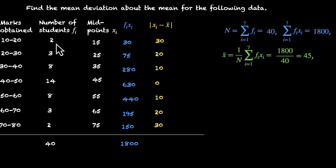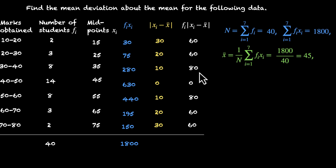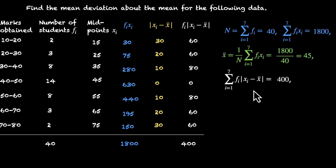But 30 appears twice and 0 appears 14 times, so we must account for frequencies. Multiplying each deviation by its frequency: 30×2 = 60, 20×3 = 60, 10×8 = 80, 0×14 = 0, 10×8 = 80, 20×3 = 60, 30×2 = 60. Adding these up: 60×4 = 240, plus 80×2 = 160, so 240+160 = 400. Therefore Σf_i |x_i − x̄| = 400.